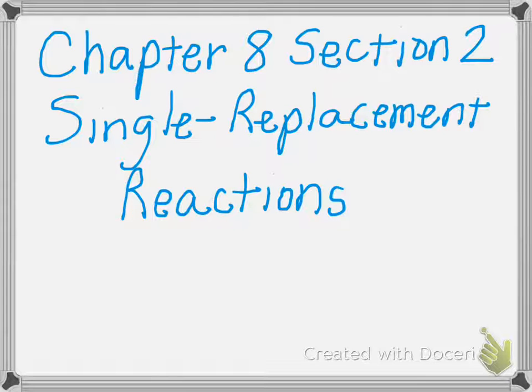Good morning chemistry students. These are your notes for chapter 8, section 2 on single replacement reactions. Before we get started, let's review what we've talked about so far. In section 1, you learned how to write and balance chemical equations. You start with a sentence, and from that sentence you write your word equation. The purpose of that is to get rid of extra information — the only symbols in a word equation are plus signs and arrows.